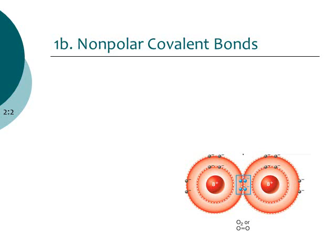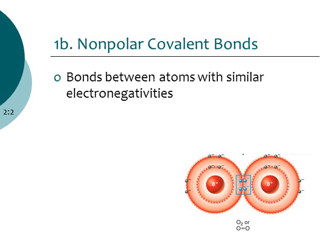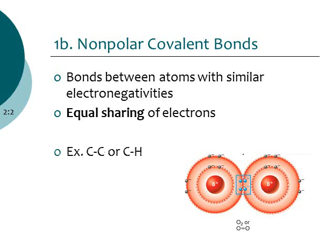Nonpolar covalent bonds happen when your two atoms have similar electronegativities — they're equally greedy for electrons, so nobody holds on to electrons more than the other. They share electrons equally. Good examples are two carbon atoms bonding together, carbon and hydrogen bonding together, or two oxygen atoms bonding together.